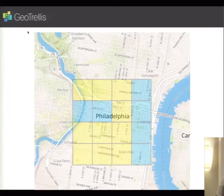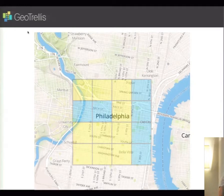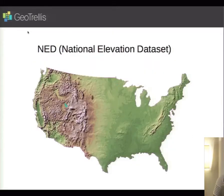GeoTrellis has traditionally focused on raster data and raster processing. Raster data is basically a matrix of cells that covers an extent of land. For example, a four-by-four raster where each cell covers a part of Center City, Philadelphia, where yellow represents one value and blue represents another. A more realistic raster dataset is the National Elevation Dataset, which describes the elevation of the contiguous United States at high resolution — an open dataset issued by the U.S. Geological Survey.